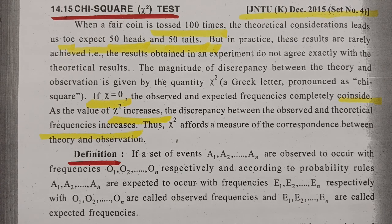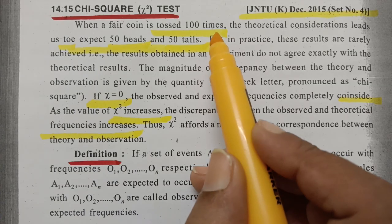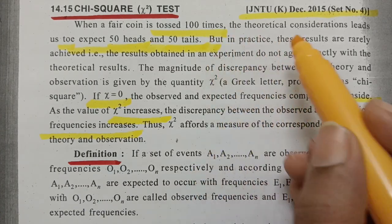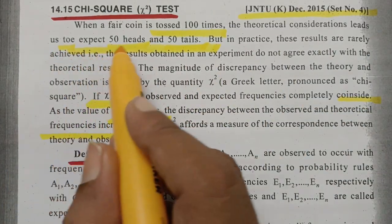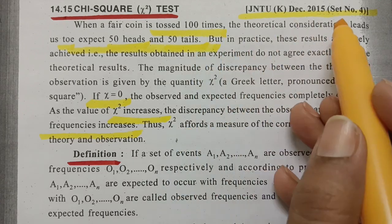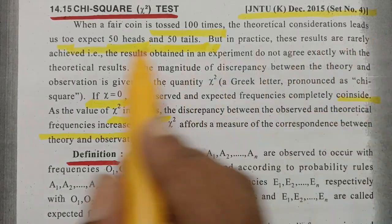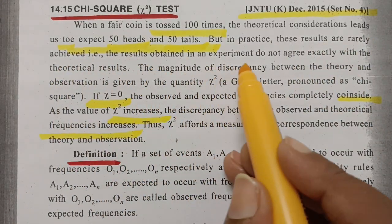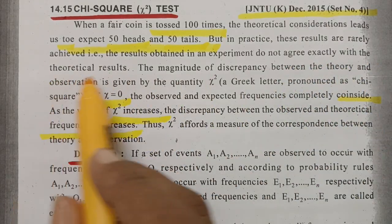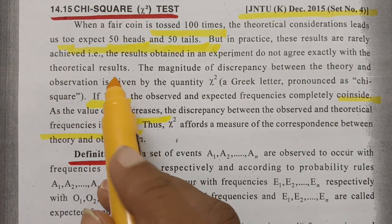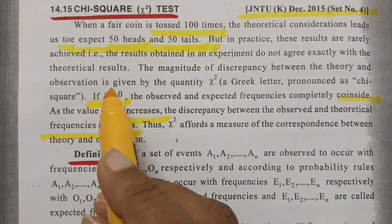Let's get into today's video. It is strictly from the textbook, and I'll explain each and every point so that you will get clarity and can write with your own vocabulary. When a fair coin is tossed 100 times, theoretical considerations lead us to expect 50 heads and 50 tails. But in practice, these results are rarely achieved — the results obtained in the experiment do not agree exactly with the theoretical results. So theory says something and our observed values say something different.